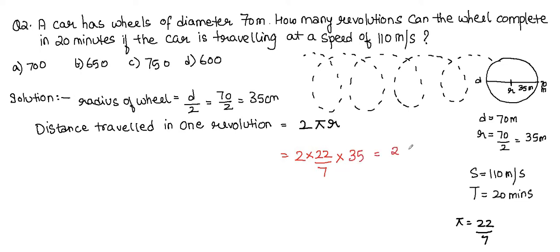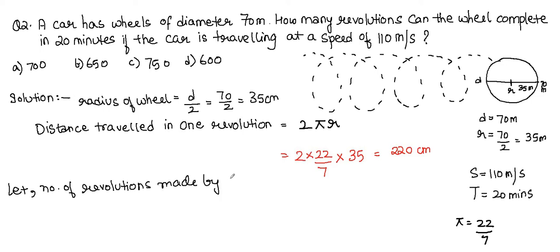The distance in one revolution = 220 metres. Now let the number of revolutions made by the wheel be x. We don't know how many revolutions the wheel will make, so let us call it x.